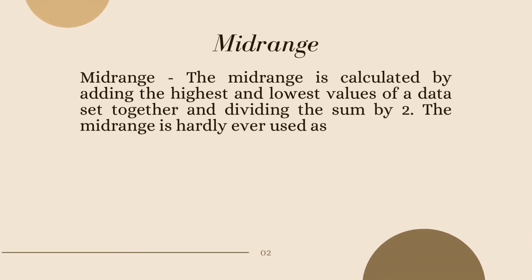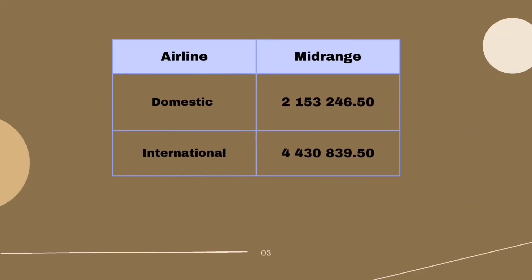Last but not least, we need to find the mid-range for the dataset. The mid-range is calculated by adding the highest and the lowest value of a dataset together and dividing the sum by 2. The mid-range is hardly ever used as a measure to find the center. After the calculation, the mid-range for the domestic airline is 2,153,246.50, while the international airline is 4,430,839.50. Thank you.